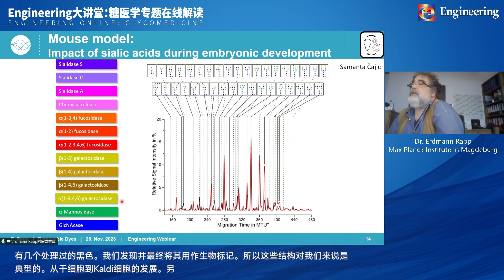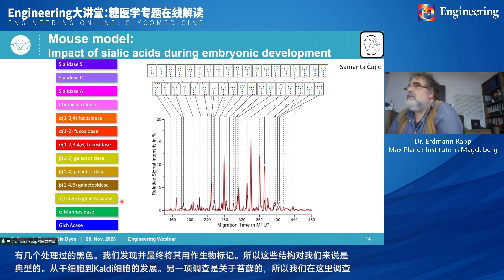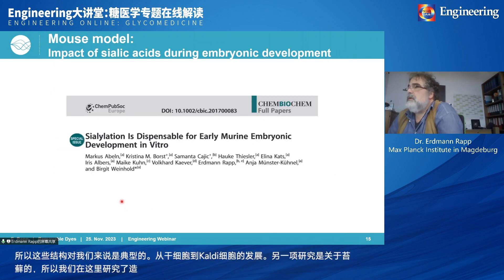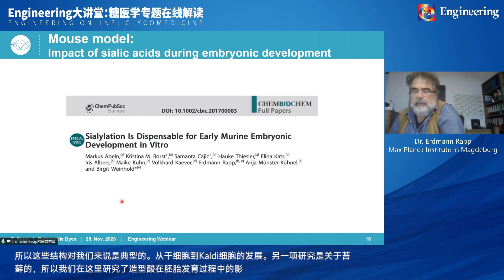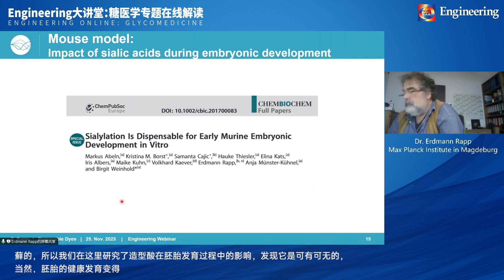Another investigation was on mouse embryonic development, where we investigated the impact of sialic acids. We found that in the early stage, sialylation is dispensable, but later it becomes very important for healthy embryonic development.